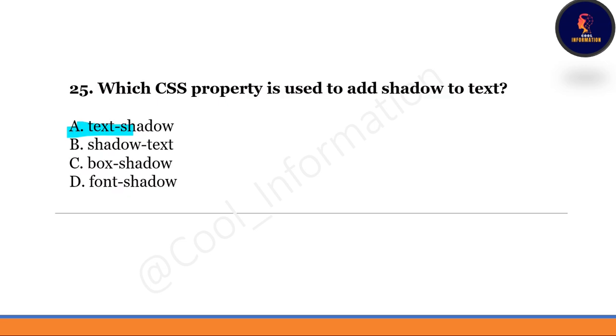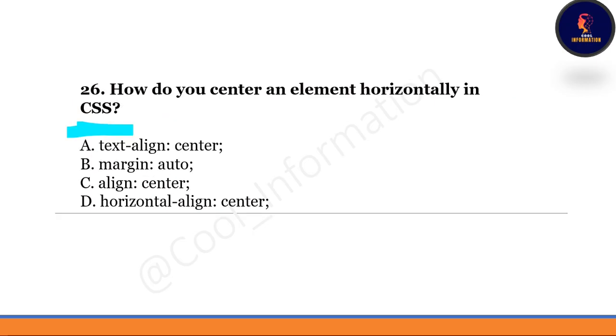Next question: which CSS property is used to add a shadow to the text? The correct option is option A — the text-shadow property is used to add a shadow to the text.